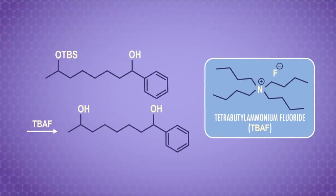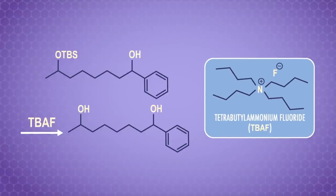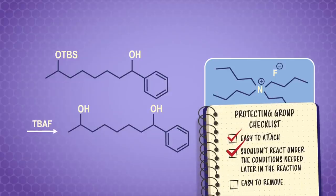Finally, it's time to remove the protecting group with an acid or a fluoride. In this case, tetrabutylammonium fluoride, or TBAF for short. Our alcohol-protecting group is easy to remove. Check. Just in case you had doubts, there's the checklist proof that siloethers are good chemical disguises.